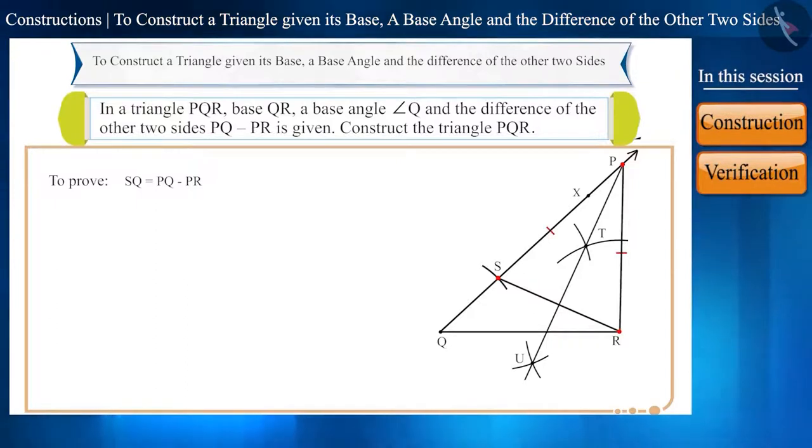Point P is equidistant from point S and point R because this point is located on the bisector of the side SR. Therefore, PS is equal to PR. Let's call it equation 1.